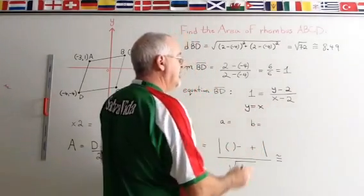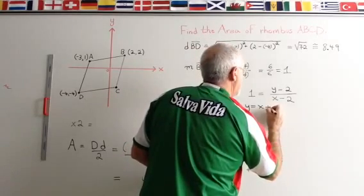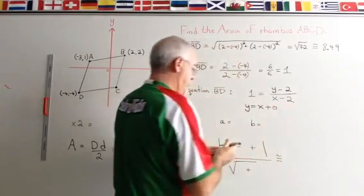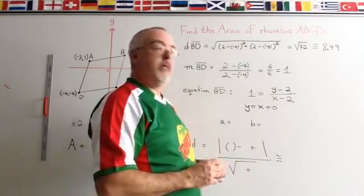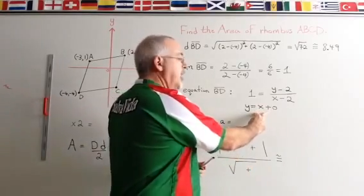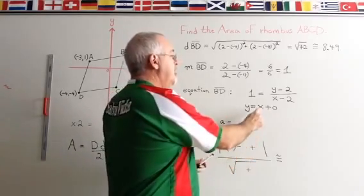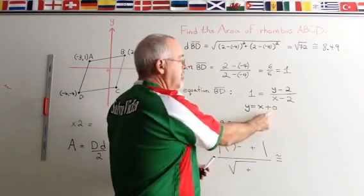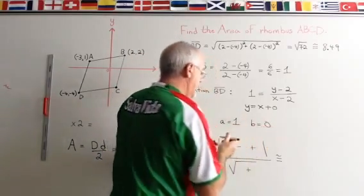But I choose to express that as Y equals X plus 0. Because to use the distance between a point and a line formula, I'm using the Y equals AX plus B form for the straight line equation. My A is 1. And I'm showing my B. My B is 0. So A equals 1. B equals 0.